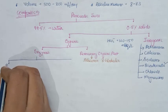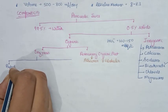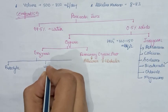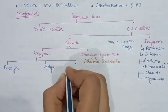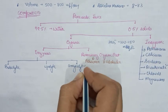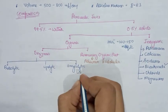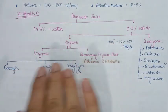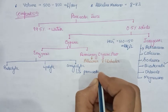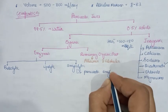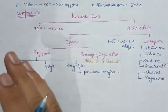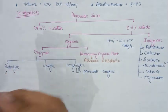Enzymes of pancreatic juice are divided into three groups: proteolytic, lipolytic, and amylolytic. In the amylolytic group there is only one enzyme — pancreatic amylase.